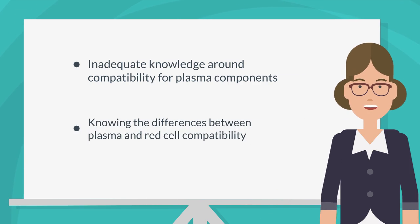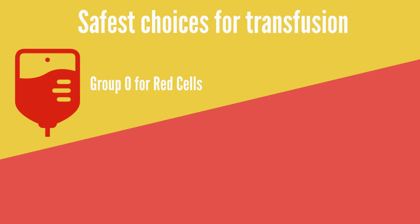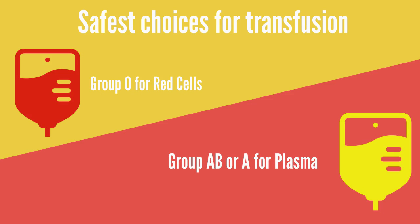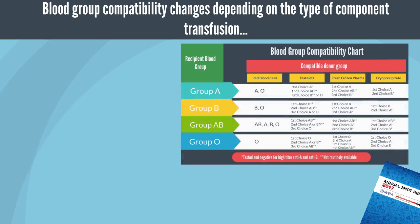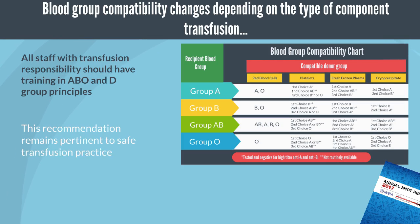When the patient's group is unknown, for red blood cells use group O, but the safest choice for plasma components is group AB. In the 2017 SHOT report, SHOT recommended that all staff with a responsibility for transfusion processes should have training in ABO and D-group principles. This recommendation remains pertinent to safe transfusion practice.